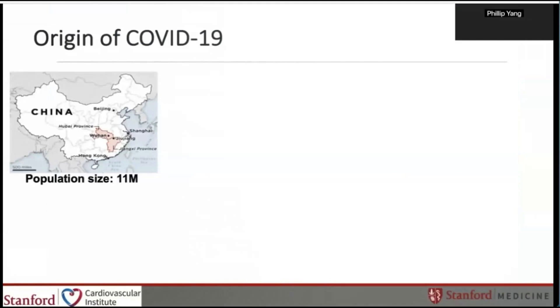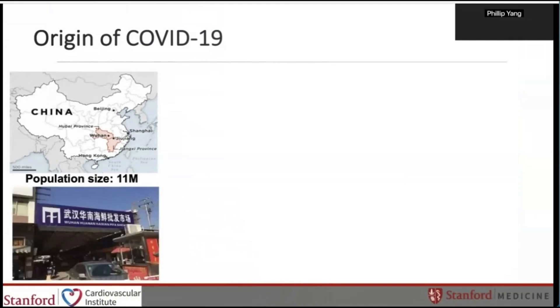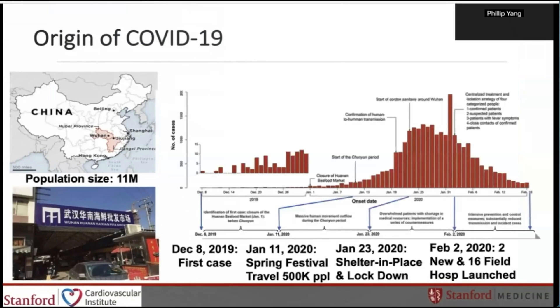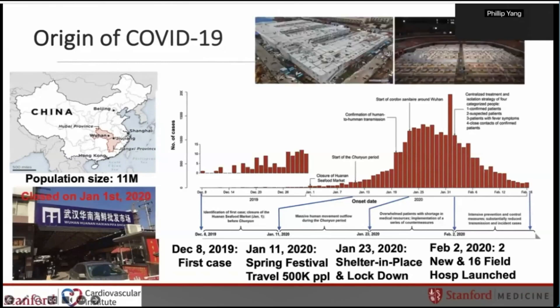We all know that COVID-19 started in Wuhan, China — population 11 million. This is the animal market that we think it originated from. On December 8, 2019, the first case was reported. This was followed by large-scale travel during the spring festival in early January, but as of January 23rd, shelter-in-place and lockdown were instituted. By February 2nd, two new field hospitals were launched in Wuhan, as you can see in the pictures above.